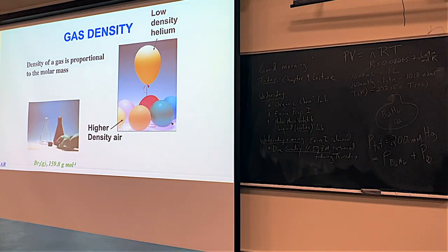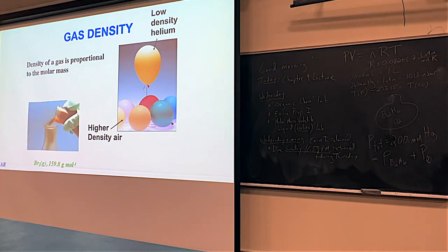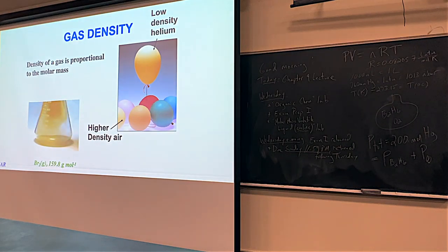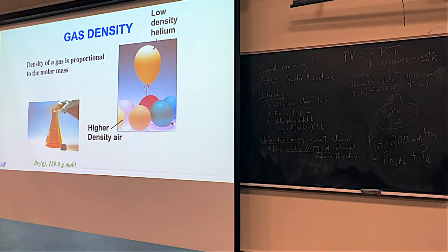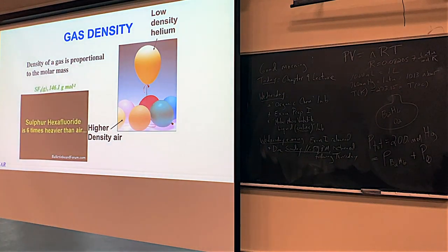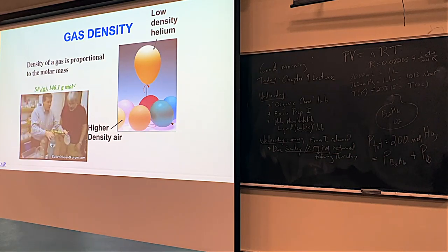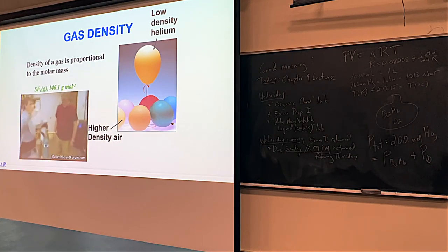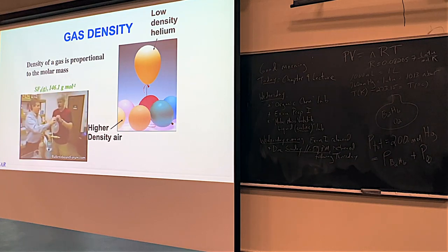Bromine gas is roughly five times more dense than air — it can actually be poured from one flask to another. The density of bromine, like that of all gases, is directly proportional to the molecular mass of its molecules in the gas phase.